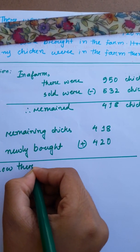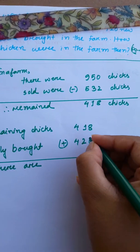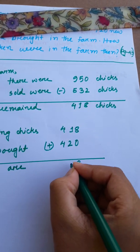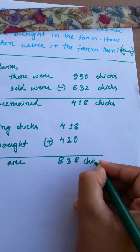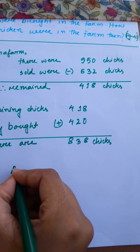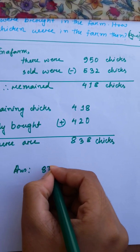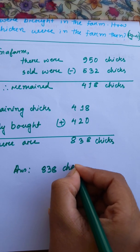Now, there are 838 total. Answer: 838 chicks.